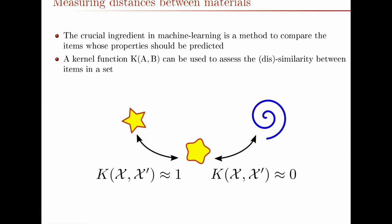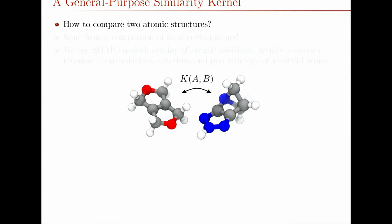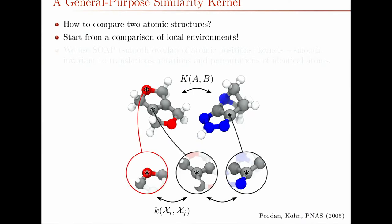Given all this, how do you compute the kernel between two molecules? It's the same question for materials. The way that we calculate the kernel between molecule A and molecule B is to look at local environments. The kernel between A and B is a combination of the kernels between local environments on molecule A and local environments on molecule B.